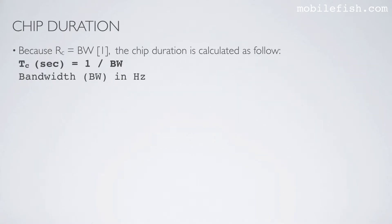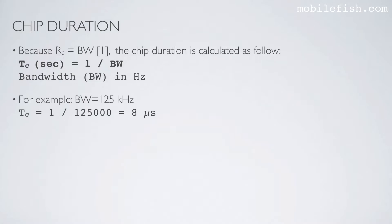Because the chip rate is the same as the bandwidth, the chip duration is calculated using this equation. For example, if the bandwidth is 125 kHz, the chip duration is 8 microseconds.